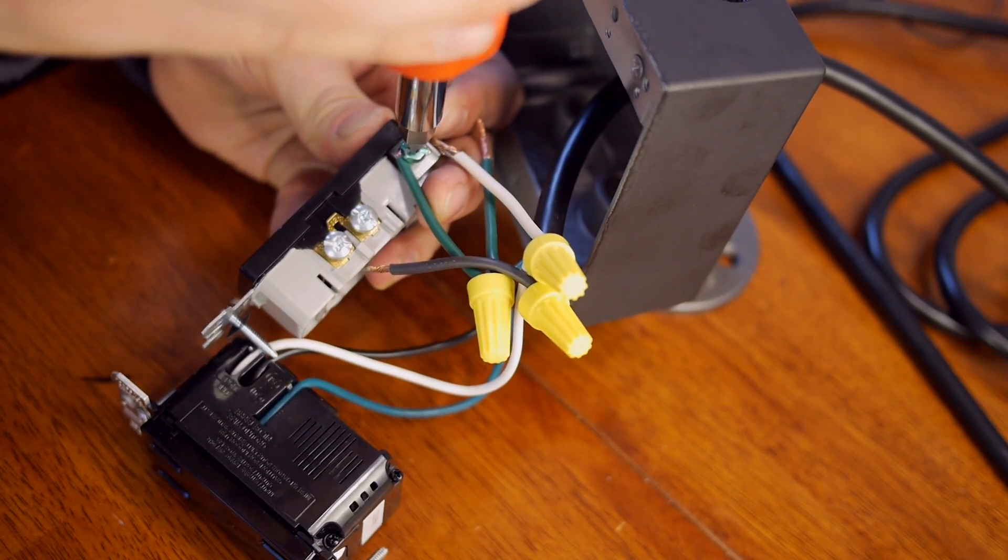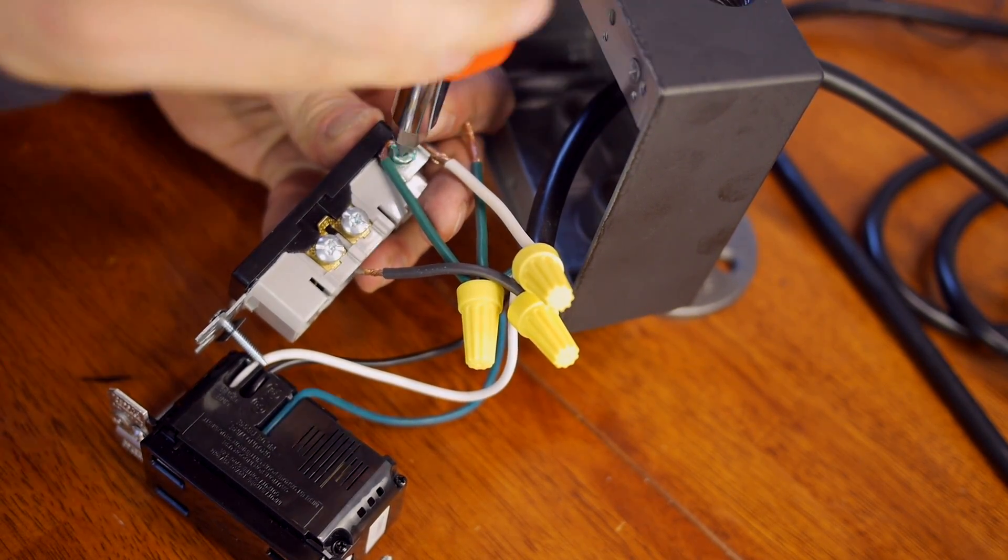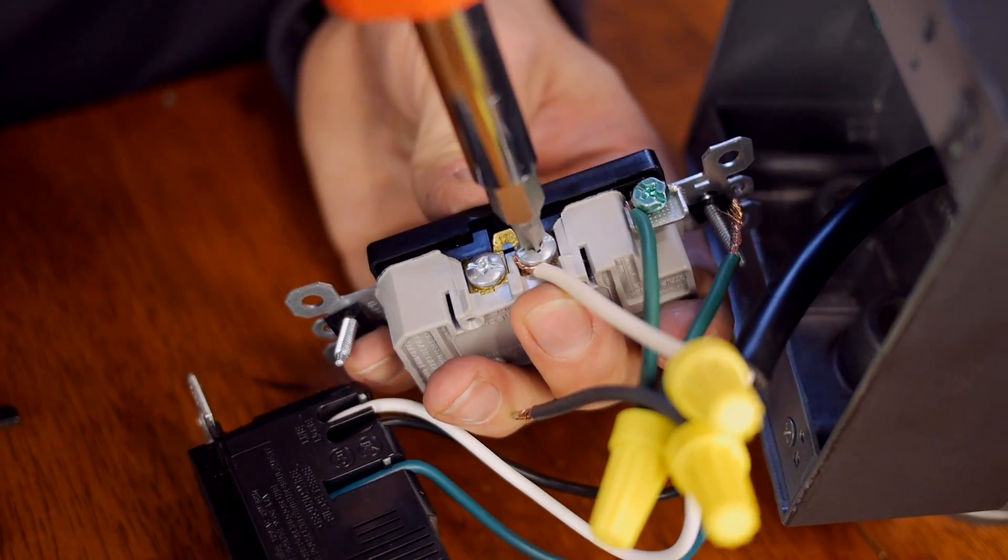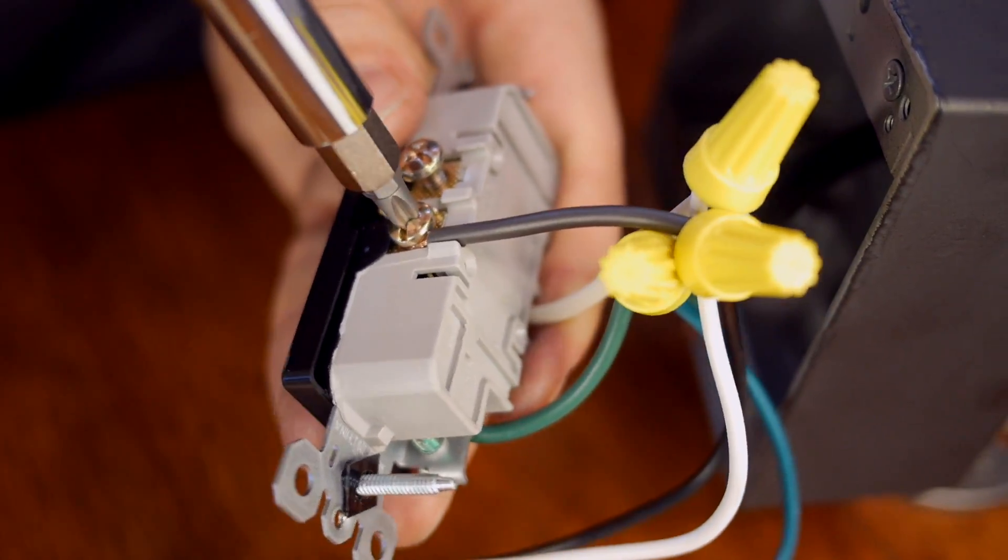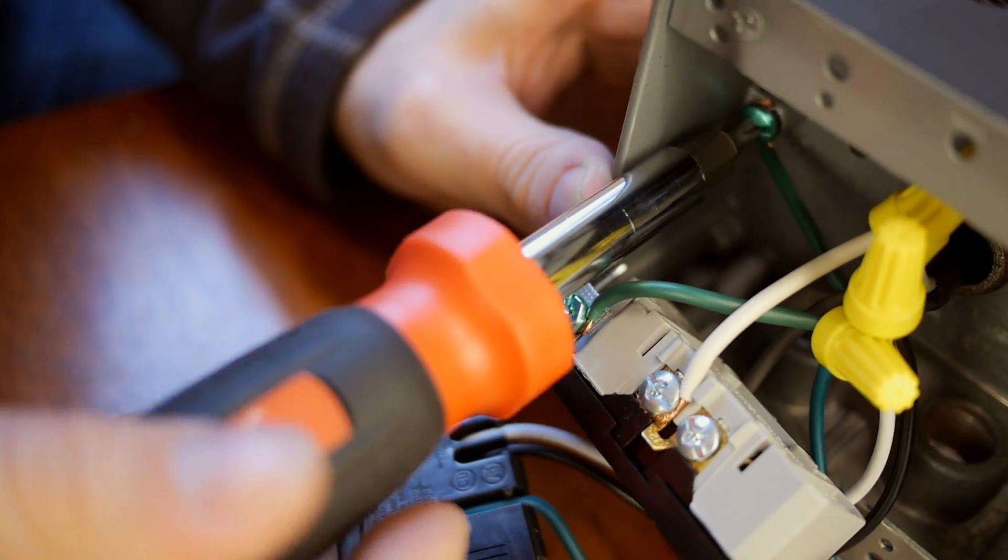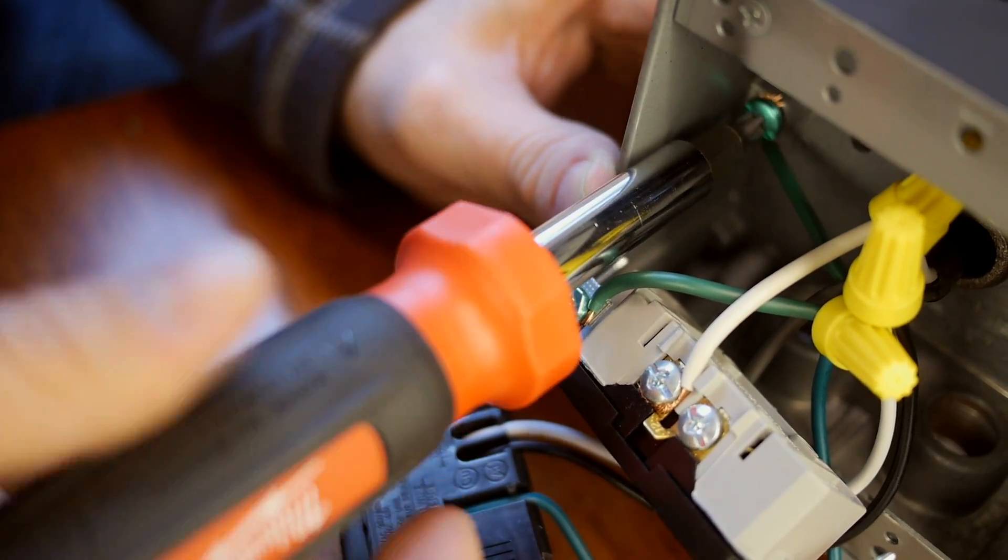With all of the wire nuts in place, the second outlet was wired. Finally, the box was grounded using a second green pigtail.